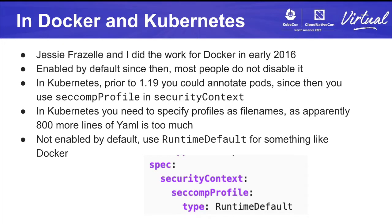Looking at the history of Seccomp applied to the container ecosystem: back in early 2016, one of the first things I worked on when I started at Docker, with Jesse Frizzell, was adding Seccomp support for Docker. It was enabled by default, which was a nice thing to have done, and most people don't disable it. Kubernetes spent a long time working out its implementation, and really only in 1.19 — not very long ago — finalized the API, and it does not enable it by default.